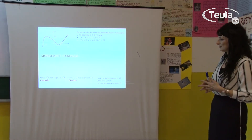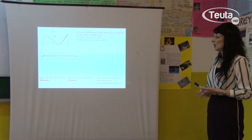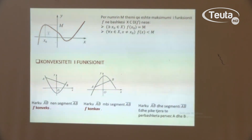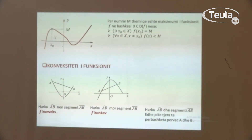Edhe një veti tjetër të funksionit që do ta shqyrtojmë është konveksiteti i funksionit. Konveksitetin e funksionit do ta shikojmë gjithashtu grafikisht. Shikoni: e kemi një grafik dhe e presim grafikun me një drejtë dhe fitojmë segmentin AB. Në rastin kur harku AB ndodhet nën segmentin AB, atëherë themi që funksioni është konveks. Kurse, në rastin kur harku i grafikut ndodhet mbi segmentin AB, themi që grafiku i funksionit është konkav.